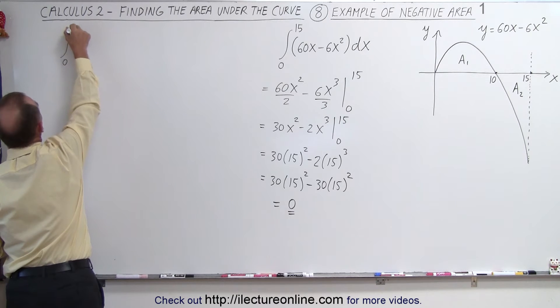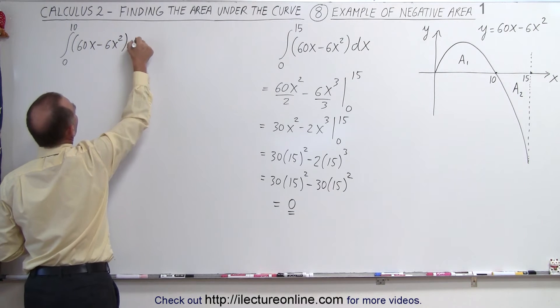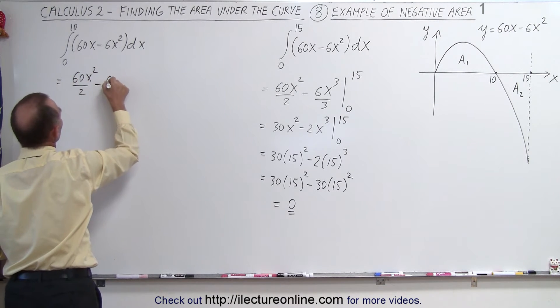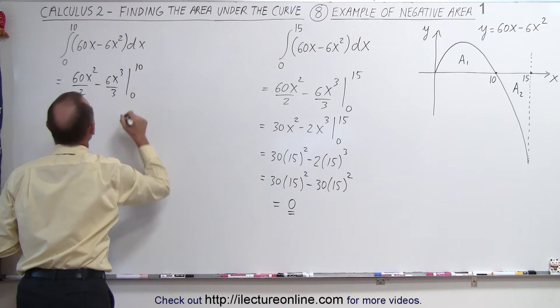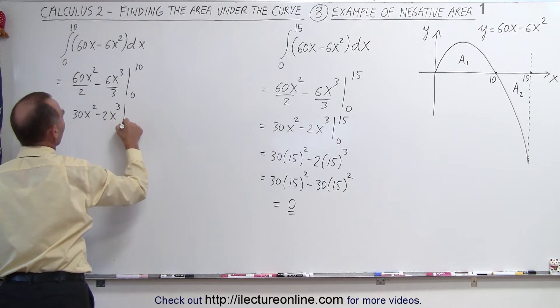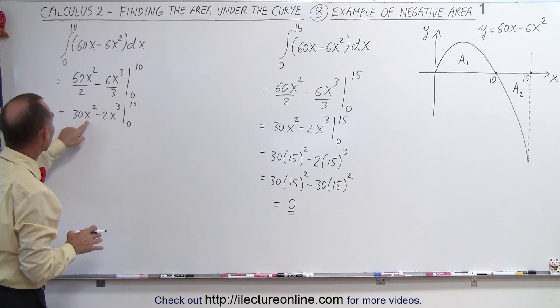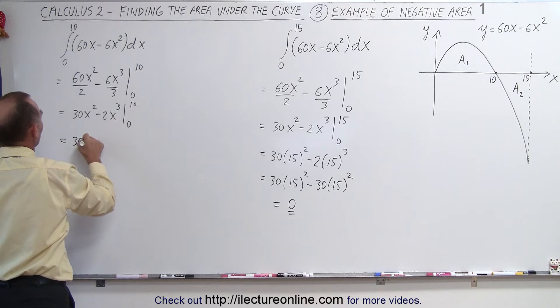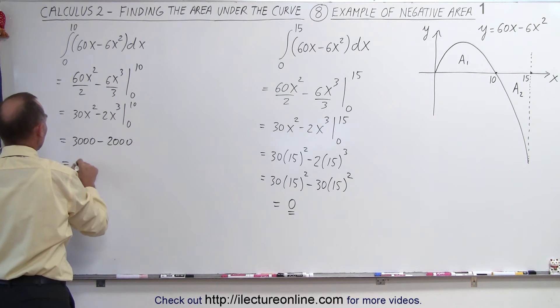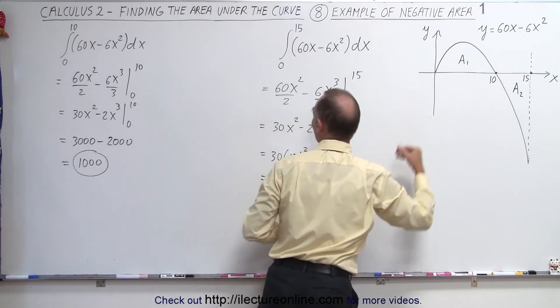So the integral from 0 to 10 of the quantity 60x minus 6x² dx is equal to 60x² divided by 2 minus 6x³ divided by 3 from 0 to 10. So that's equal to 30x² minus 2x³ from 0 to 10. And those limits are easy to plug in. Notice when we plug in 0, we get nothing. Plug in 10, we get 100 times 3, that's 3,000 minus 100, that would be 1,000 times 2, minus 2,000. Notice that is equal to 1,000, which means the area underneath the curve going from 0 to 10 is equal to 1,000.